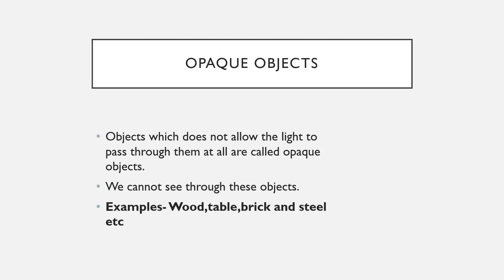Opaque objects do not allow light to pass through them at all — no light can pass through them. As already discussed, the wooden door did not allow light through, so we couldn't see the scenery outside because it obstructs the path of light. Examples of opaque objects include wood, a table, brick, and steel.